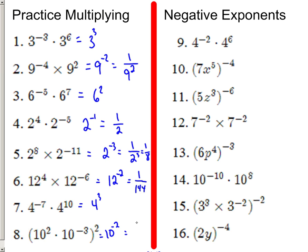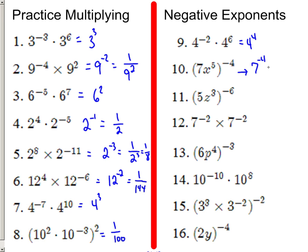Got to make it positive, so 1 over 10 squared. And 10 squared is 100, so we can just make that 1 one-hundredth. Number 9: 4 to the fourth. This one could take a little bit. Number 10 is 7 to the negative fourth power times x to the negative twentieth. All we have to do is move it downstairs to make it positive, so it's 1 over 7 to the fourth x to the twentieth.